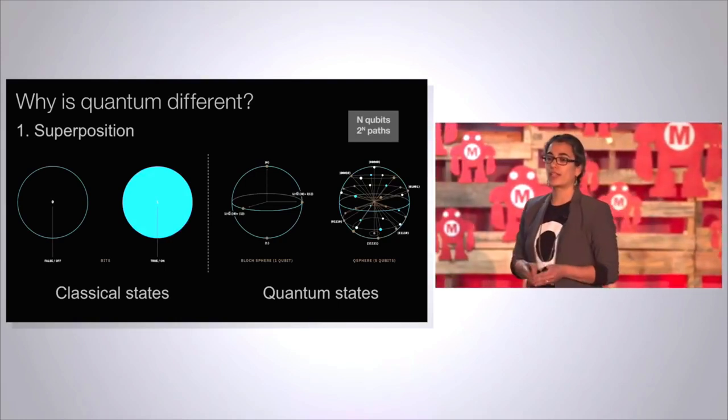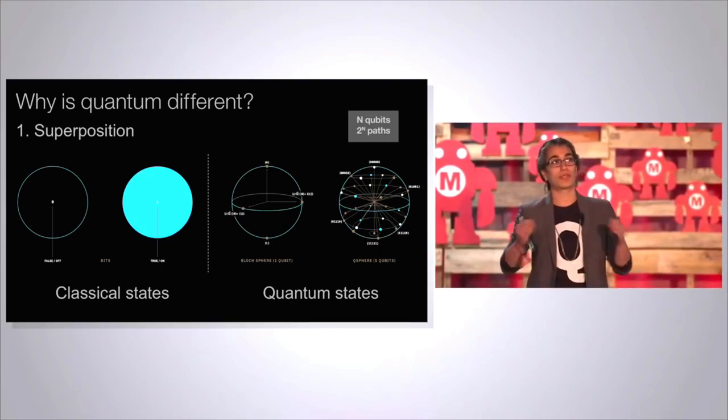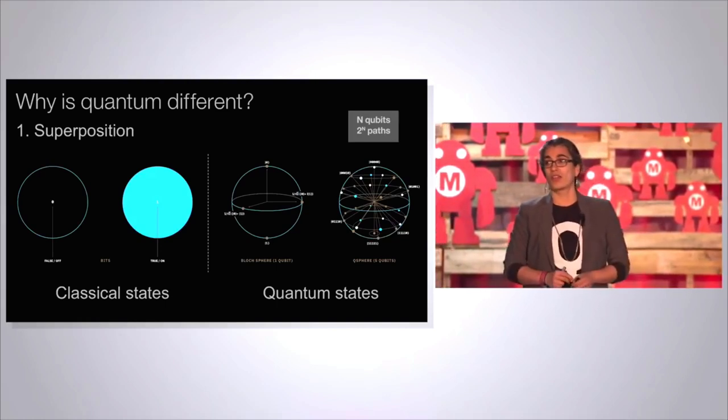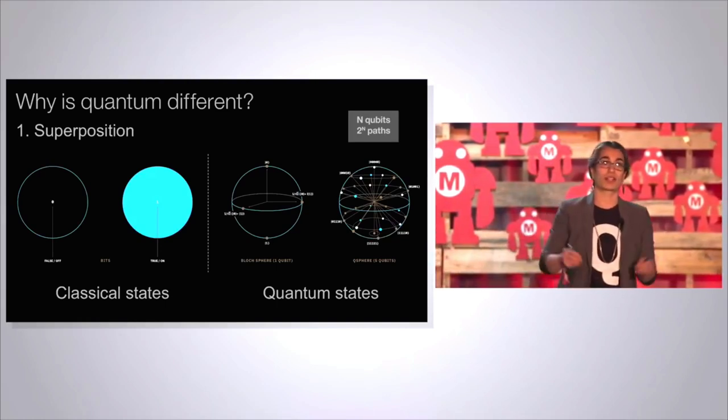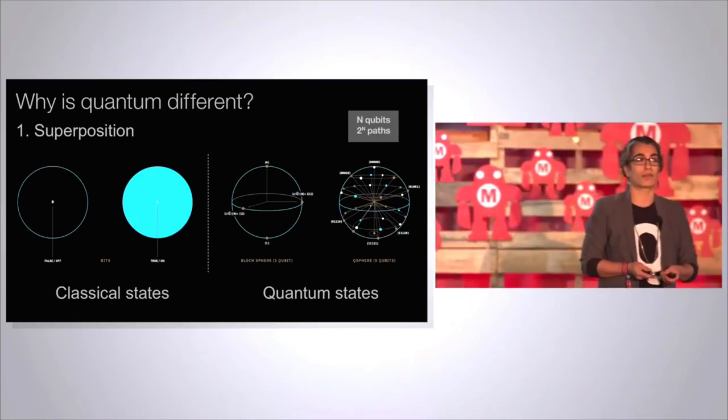So if one qubit can be in a superposition of two states, then two qubits can be in a superposition of four states and three qubits can be in a superposition of eight states. So the possibility space you can explore is much more interesting and complex in quantum information.